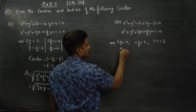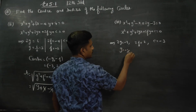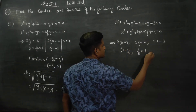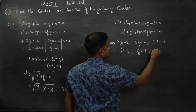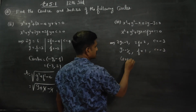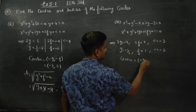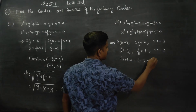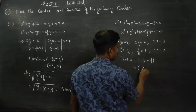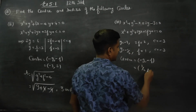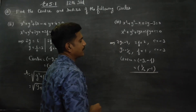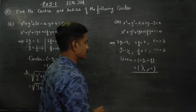From the comparison: g is equal to minus 1 by 2, f is equal to 2 by 2 which is 1, and c is equal to minus 3. My center formula is (−g, −f). Therefore, −g gives plus 1 by 2, and −f gives minus 1. So my center is (1/2, −1).